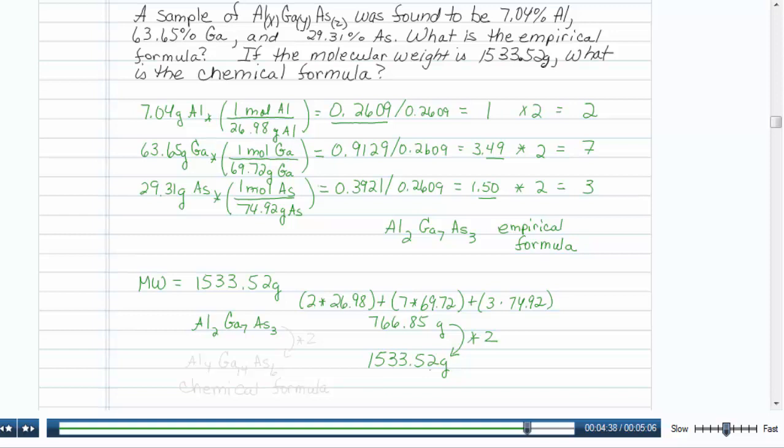Multiply by 2, right? If you take 766.85 and multiply it by 2, you'll get this value here, or very close to it. So, we'll do the same thing right here. Multiply by 2. So, that would give us 4 aluminums, 14 galliums, and 6 arsenics for our chemical formula, now that we know the molar mass.